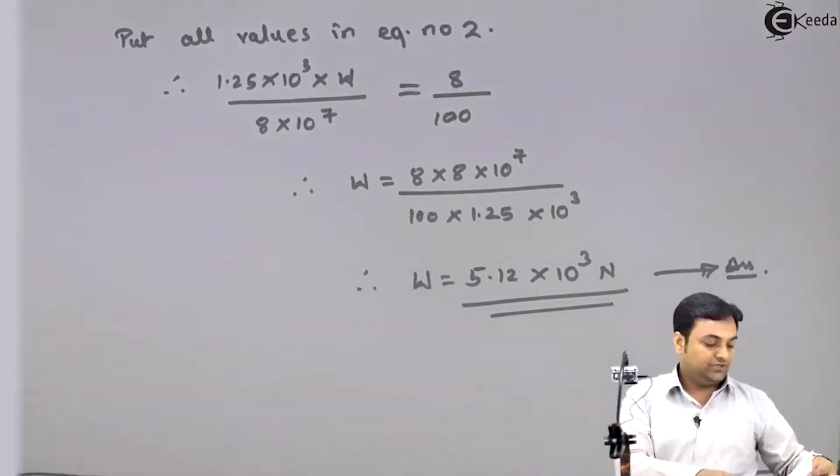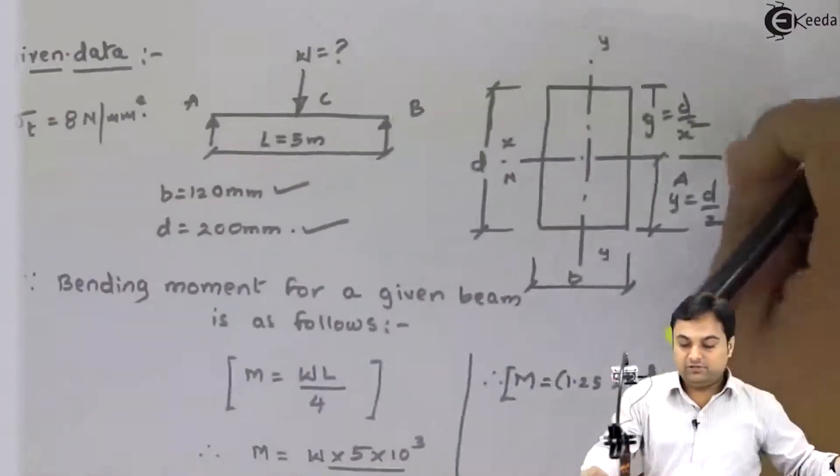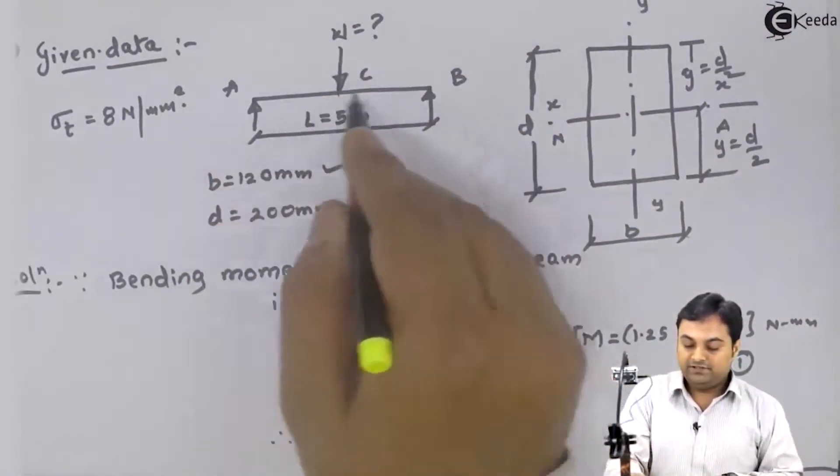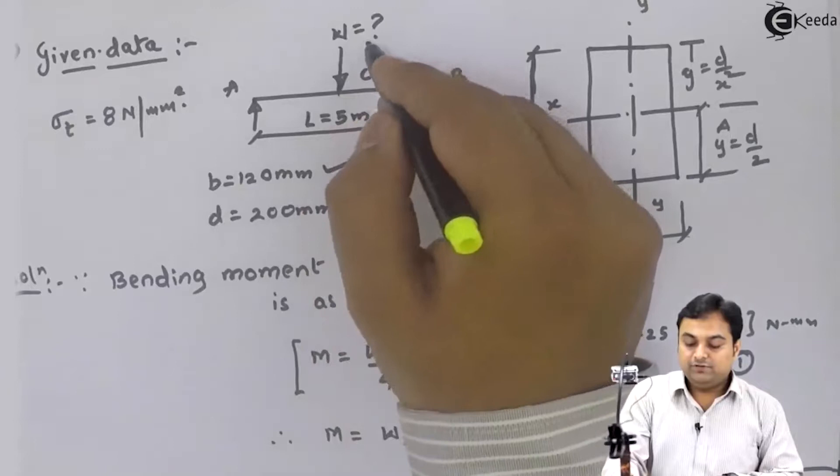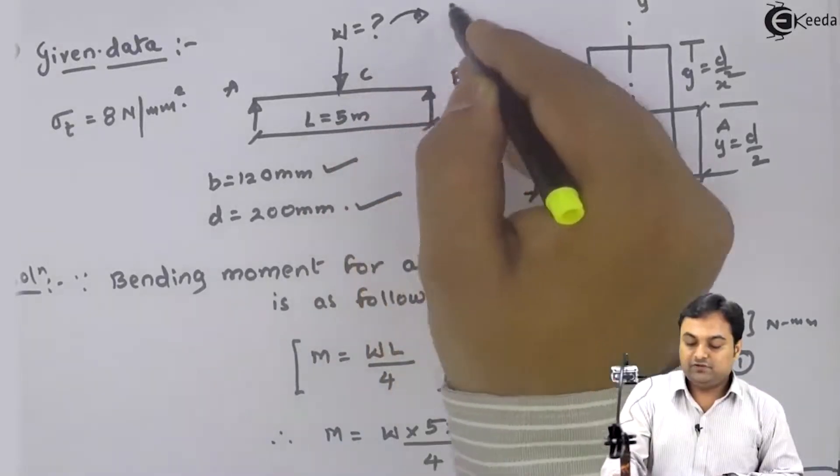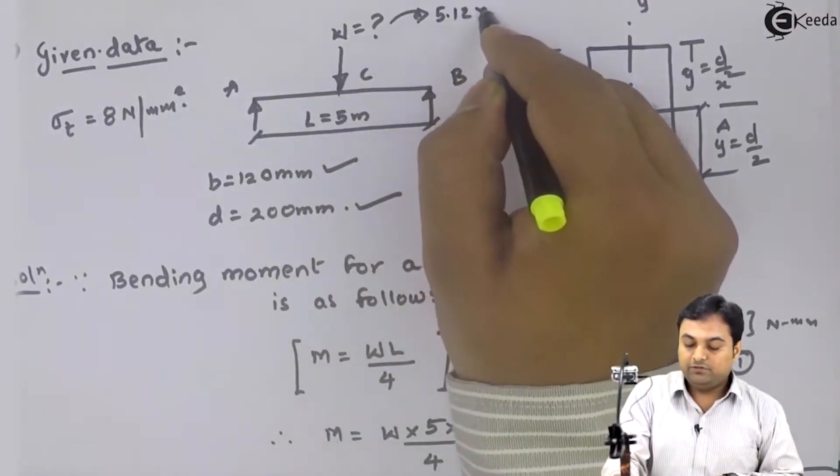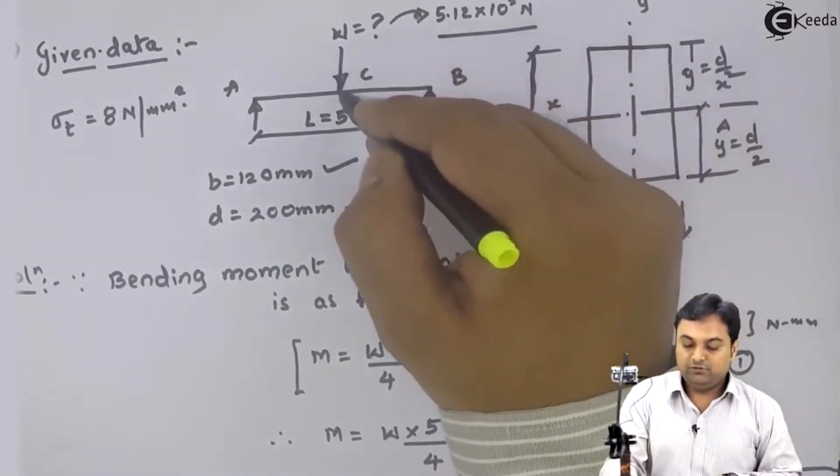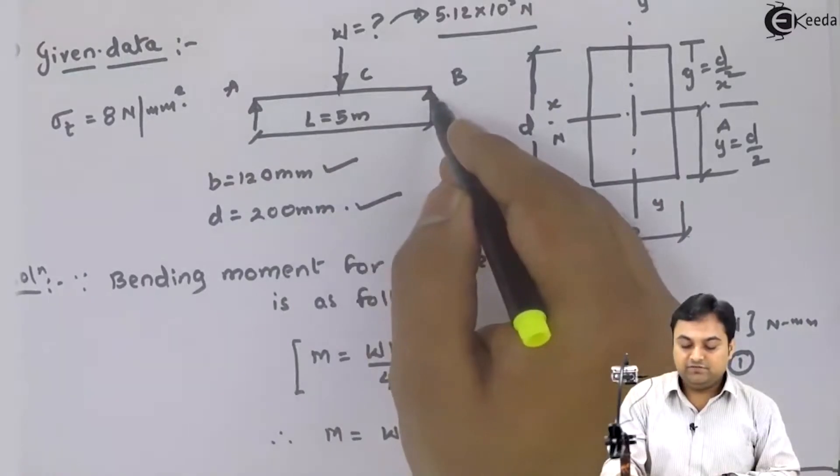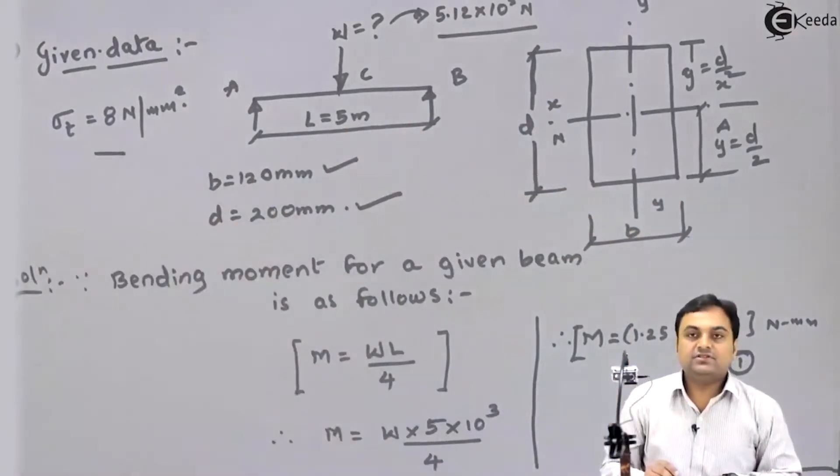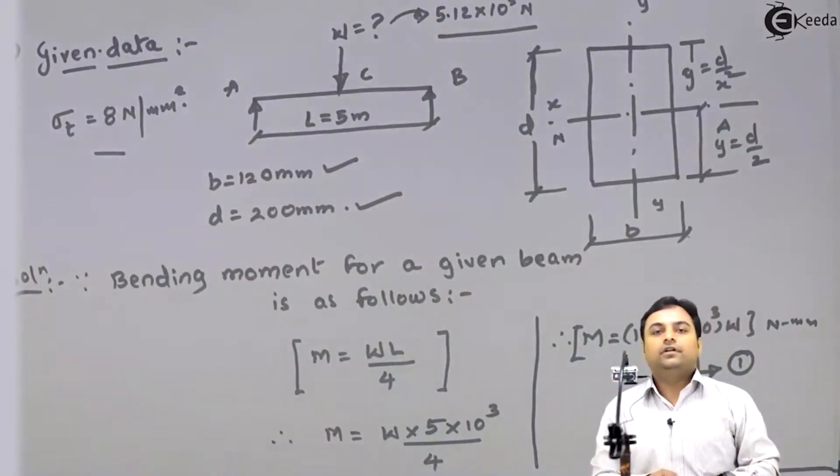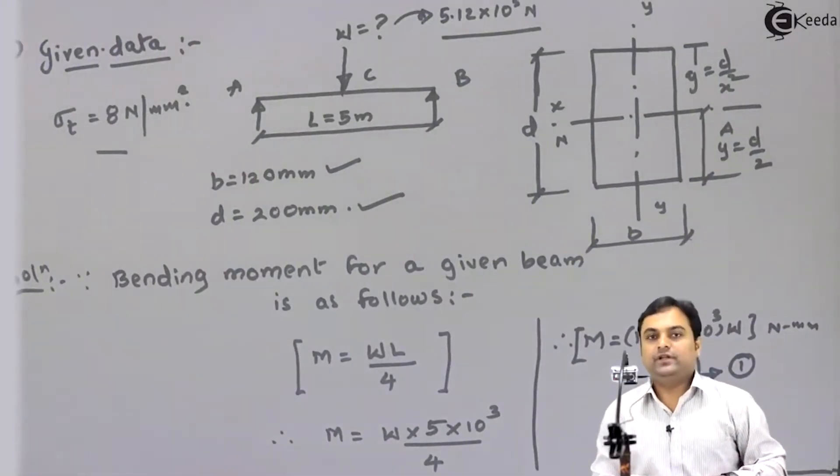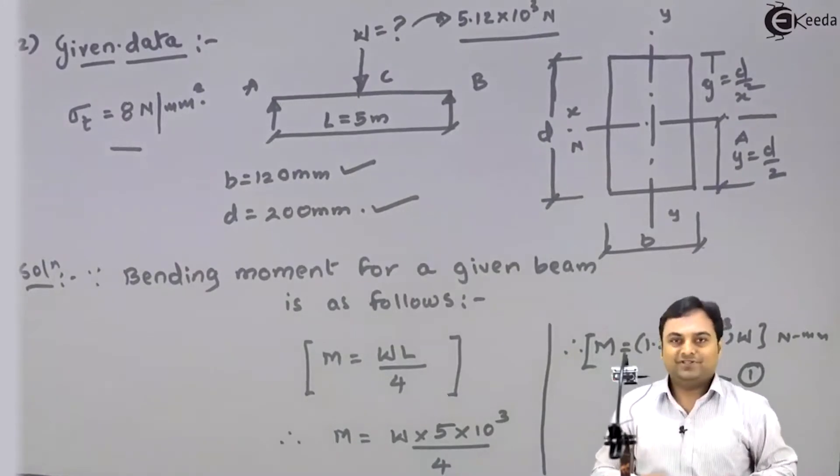We have to calculate the value of load which should be kept at the center of this beam. This value we have just found out, it is 5.12 into 10 raise to 3 N. This load we will keep at the center of the beam so that the tensile stress is 8 N per mm square. With this we have completed the second question for today.